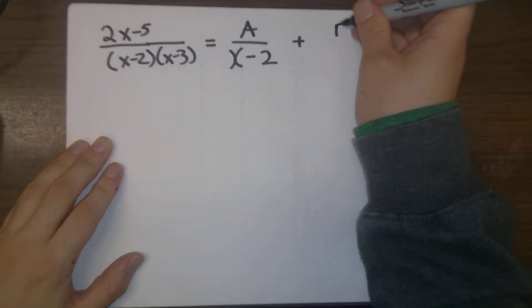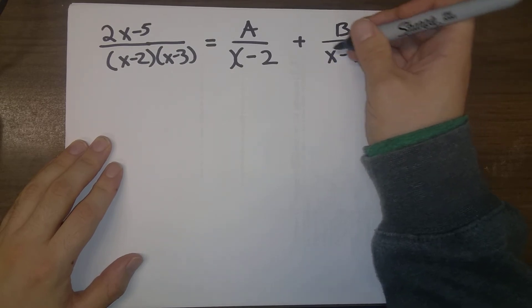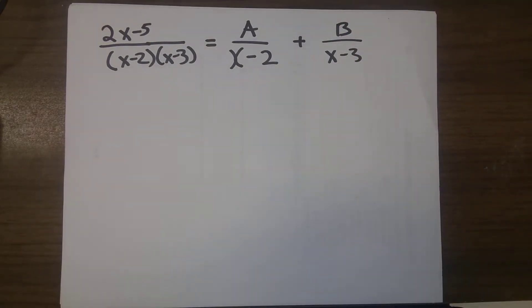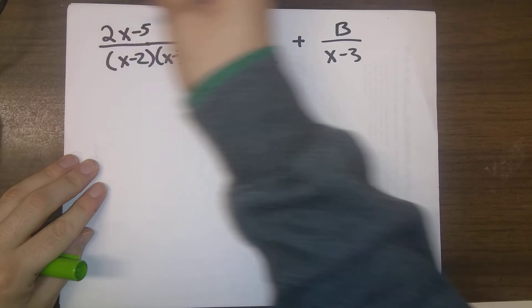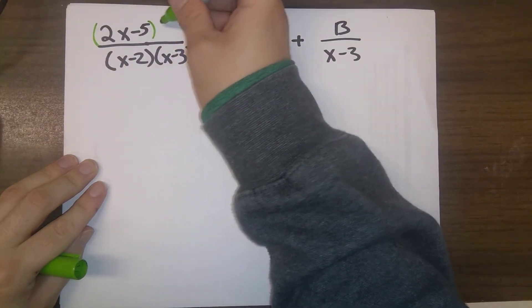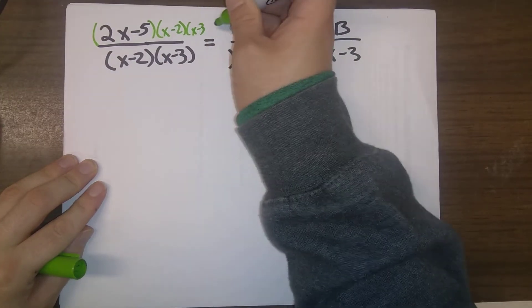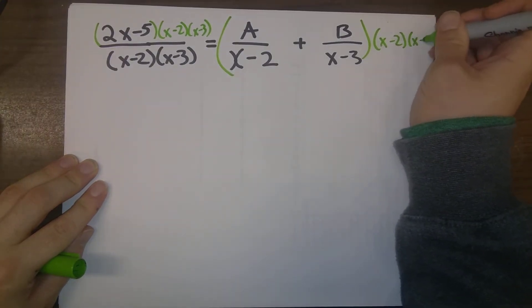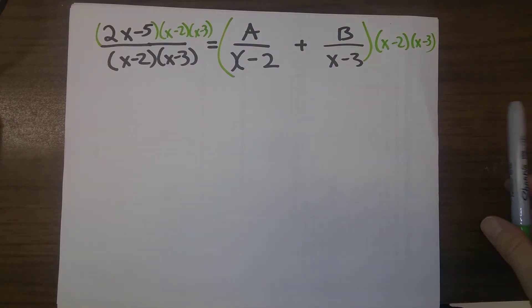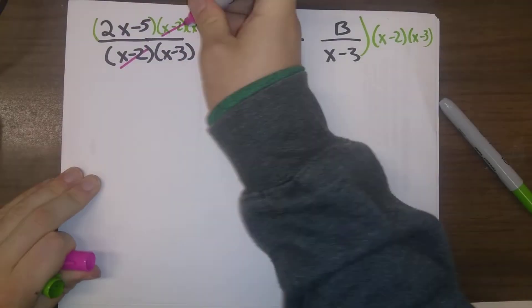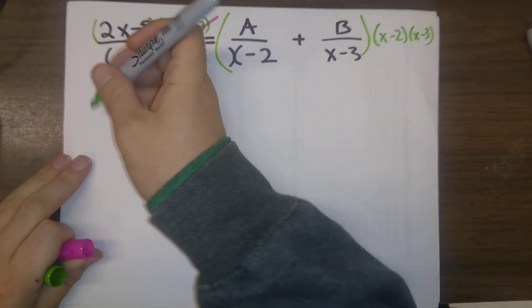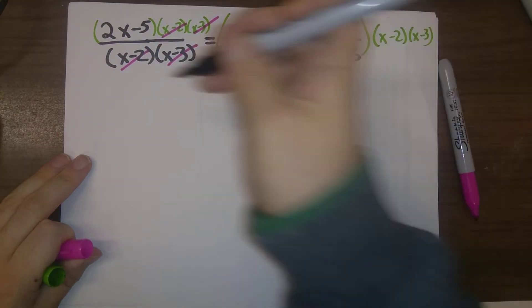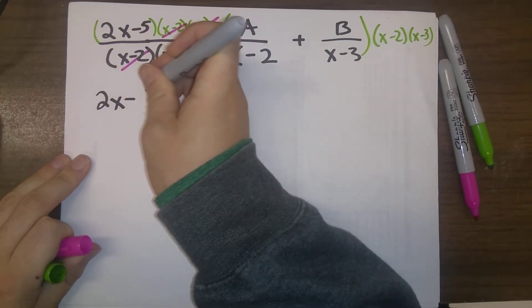So we've got 2x minus 5 divided by x minus 2 times x minus 3 is equal to A over x minus 2 plus B divided by x minus 3. What we're going to do is multiply both sides to clear out the denominator. Multiply everything by x minus 2 and x minus 3. On the left here, we just have 2x minus 5.